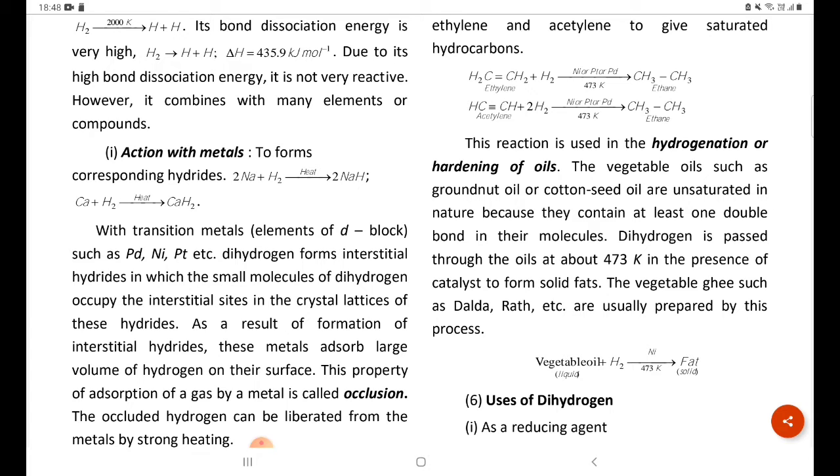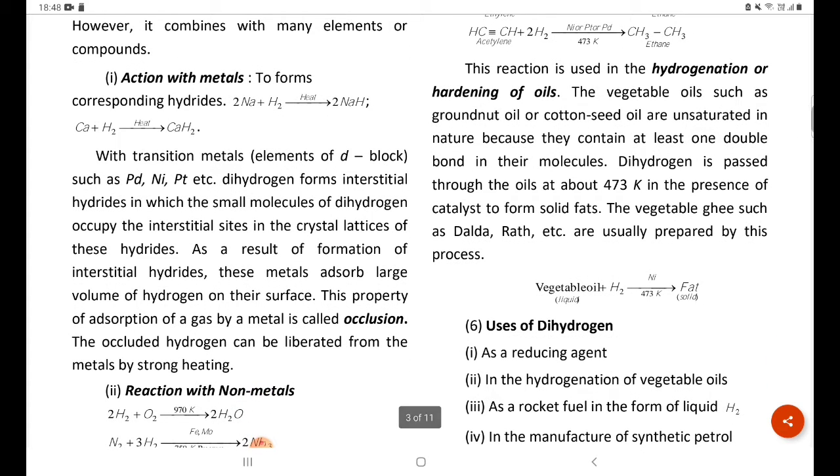As a result of formation of interstitial hydrides, these metals absorb large volumes of hydrogen on the surface. This property of absorption of gas is called metal occlusion. The occluded hydrogen can be liberated from the metals by strong heat.